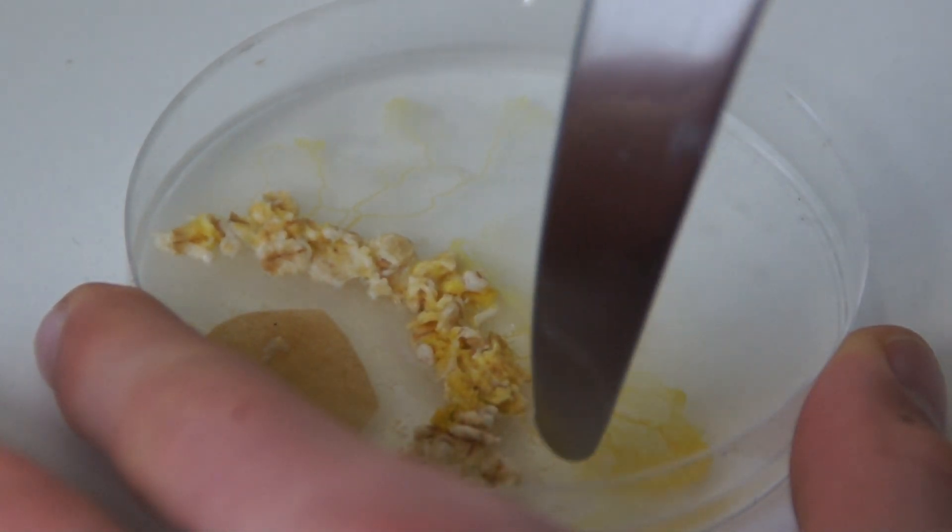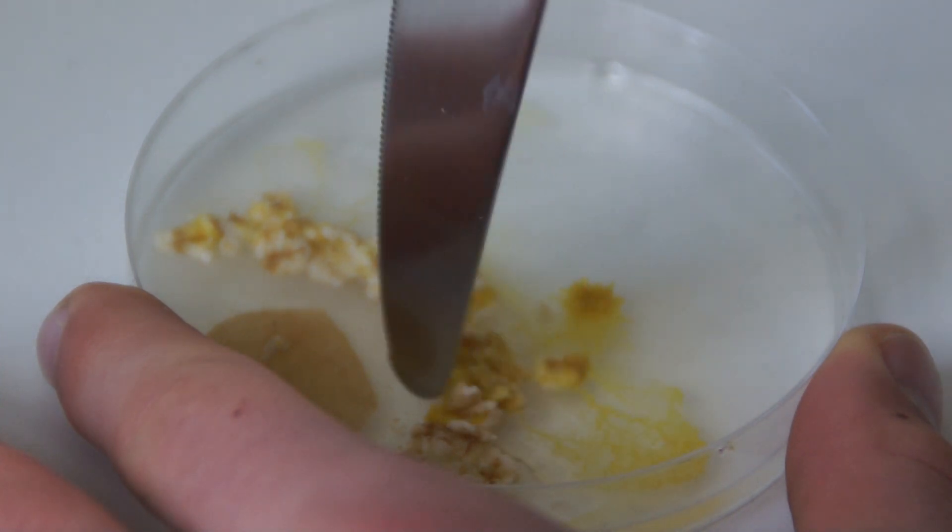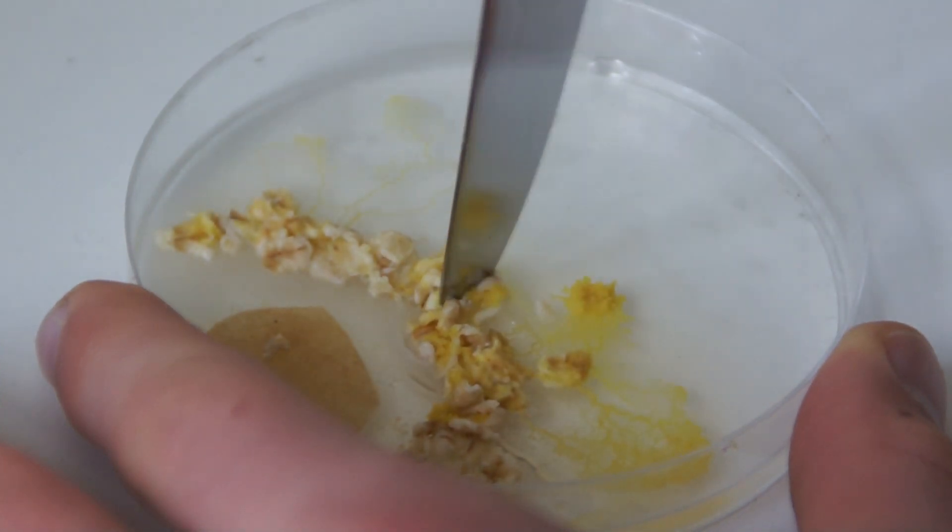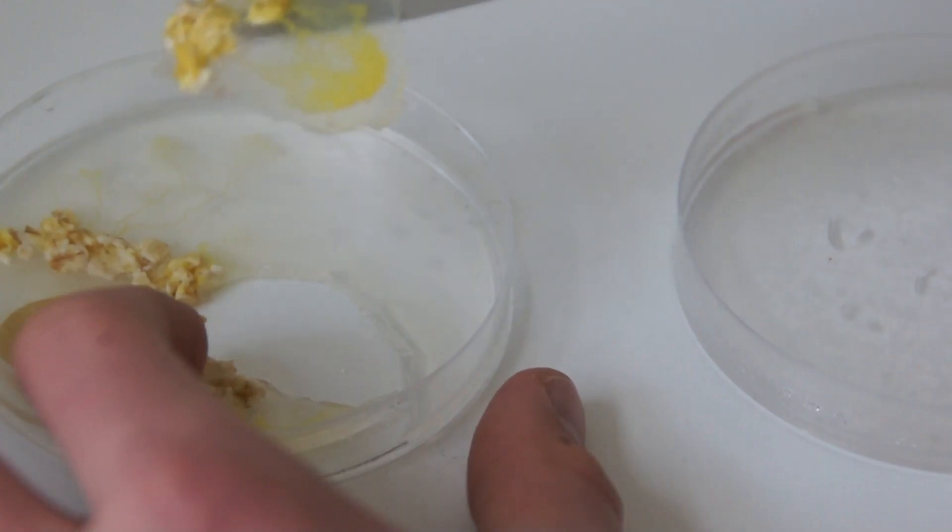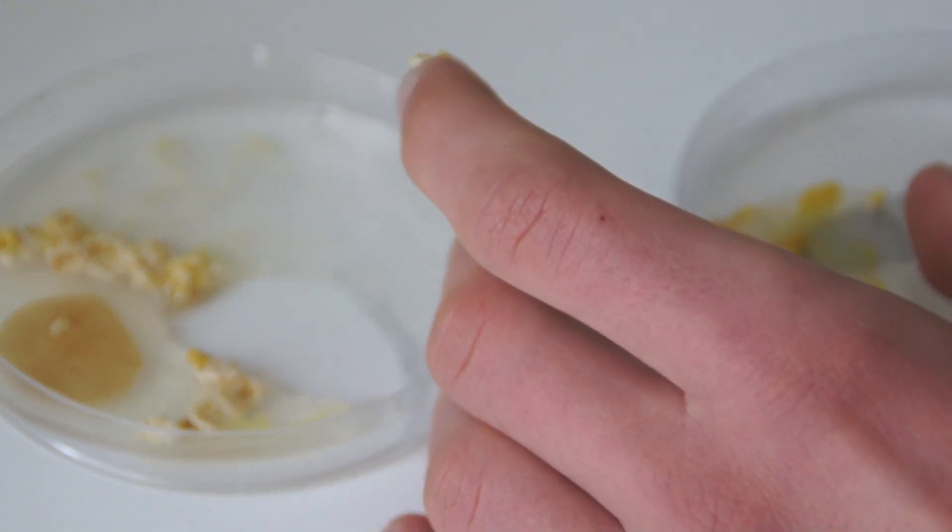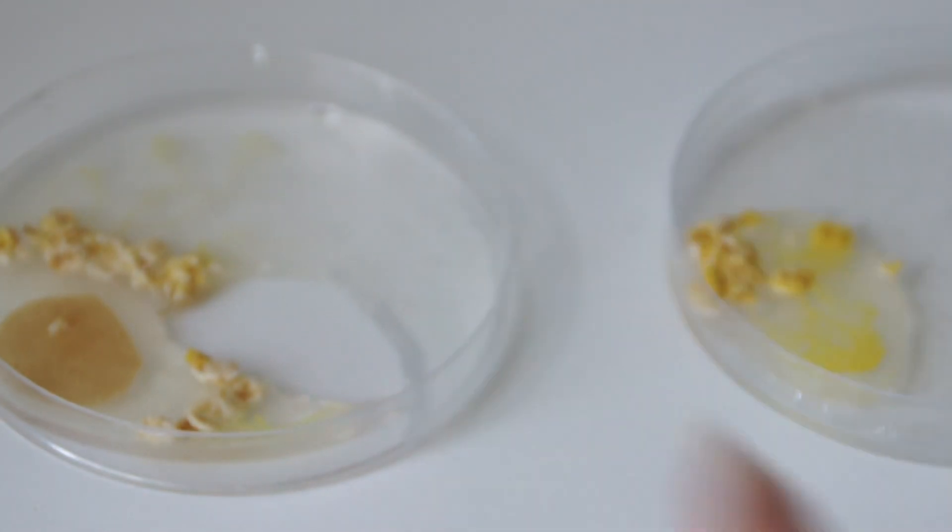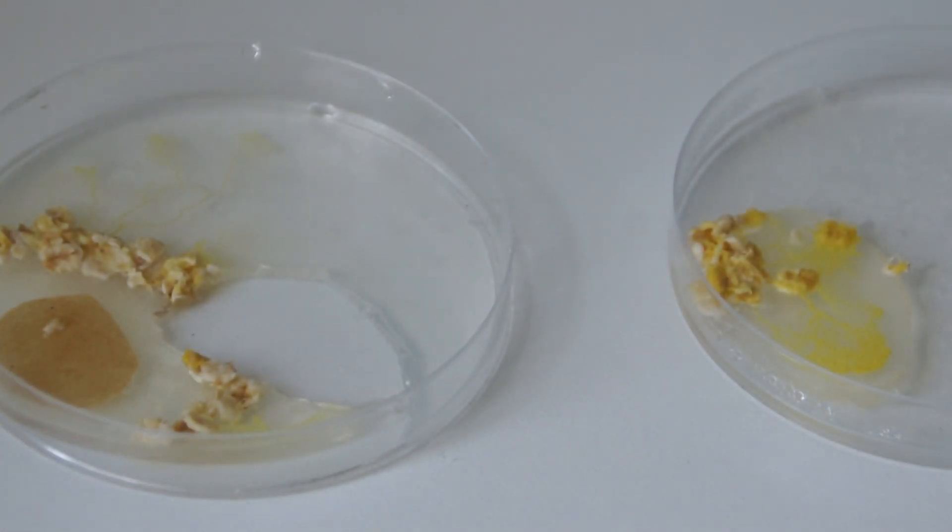Once your blob has moved after about 24 hours, cut around it like so. Transfer it onto a new plate and place some oat flakes like previously.